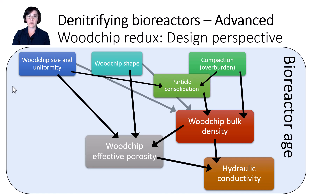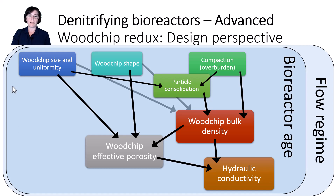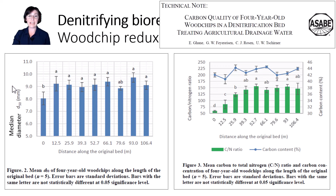Along with age comes particle consolidation, which is different than compaction. Consolidation is the slow reduction of pore voids due to steady gravitational pressure over time. To make it even more complicated, along with age comes differences in woodchip properties due to flow regime. The woodchips break down differently based on whether they're wet or dry, the amount of dissolved oxygen in the water, and possibly if there are preferential flow paths. Woodchips nearer the inlet tend to break down faster because there's more DO in the water when it first comes in, and woodchip breakdown is an aerobic process. The median size and carbon-to-nitrogen ratio of woodchips near the inlet were both different from woodchips further along the length in these 4-year-old bioreactors.